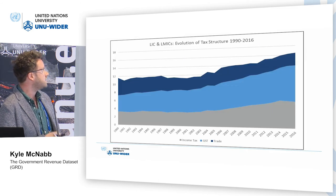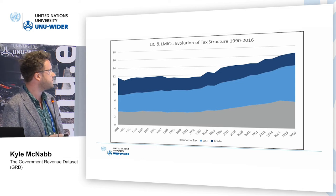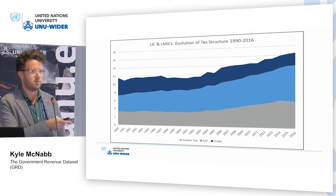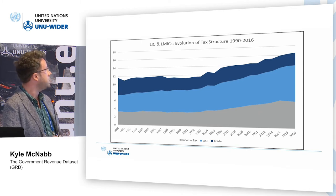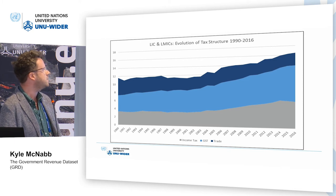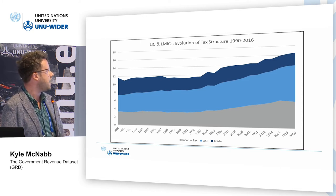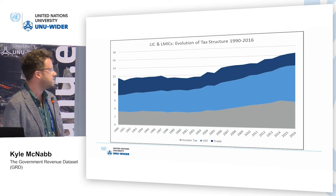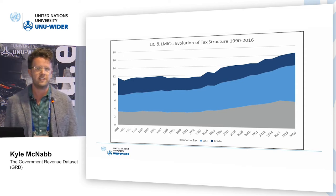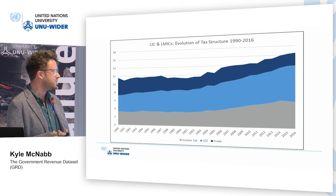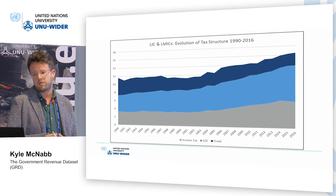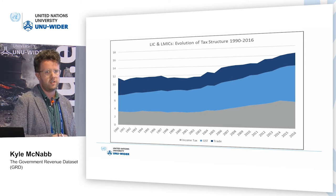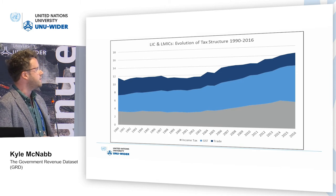If we look at the evolution of the tax structure in low and lower-middle income countries, defined as per the 2018 classification, the total tax take has been steadily increasing over time, and the tax structure has been changing. There's a much heavier reliance on income taxes than previously. It's a stylized fact of development that lower income countries depend more on trade taxes, and whilst that's still true compared to OECD countries, the relative reliance in the total tax mix is falling — now about two to two and a half percent of GDP on average in developing countries.